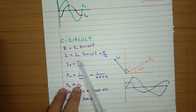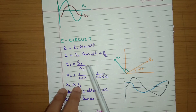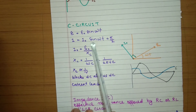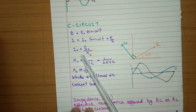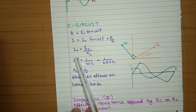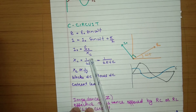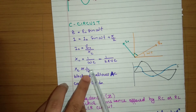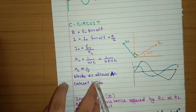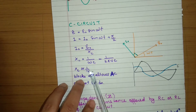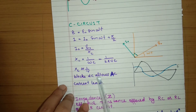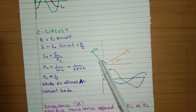In a capacitor (C) circuit, voltage is E = E₀ sin(ωt) but current leads the voltage by a phase angle of 90°. The relationship is I₀ = E₀ / X_C, where X_C is the capacitive reactance — the effective resistance of the capacitor. X_C = 1 / (ωC) = 1 / (2πνC). Capacitive reactance is inversely proportional to frequency: AC has higher frequency so it passes through, but DC has zero frequency making X_C infinite, so the capacitor blocks DC.